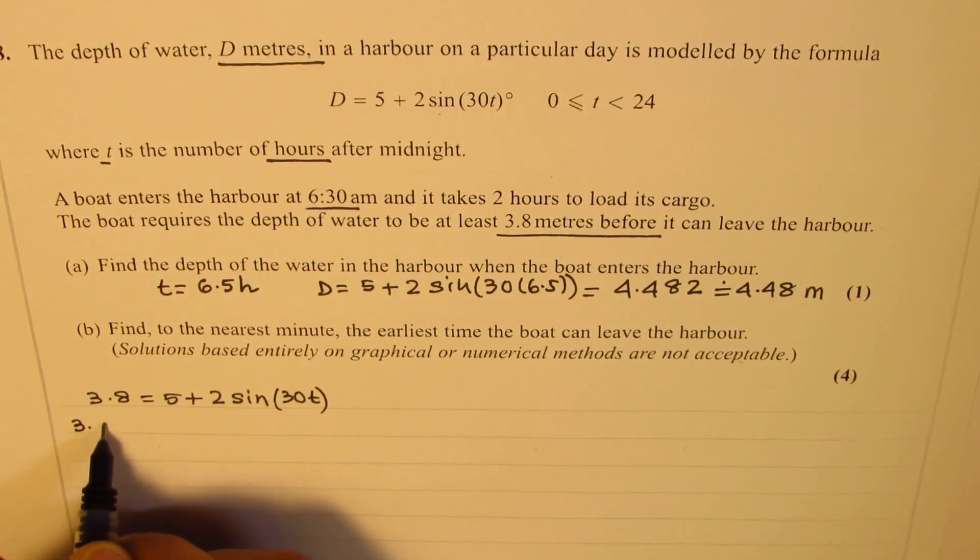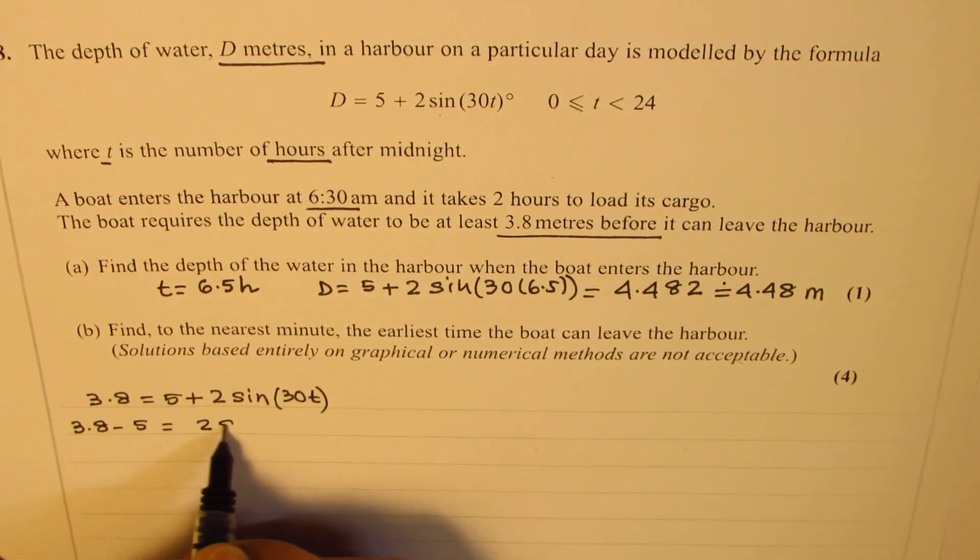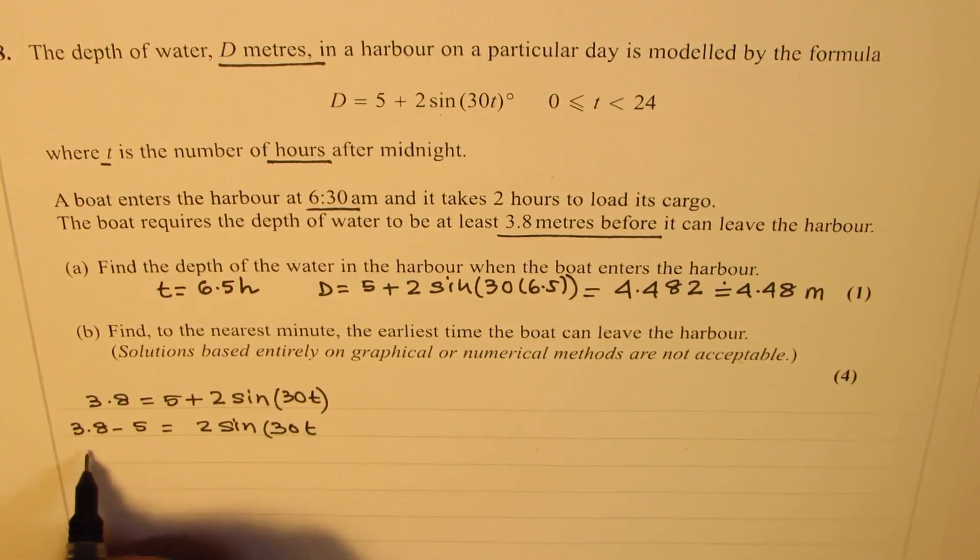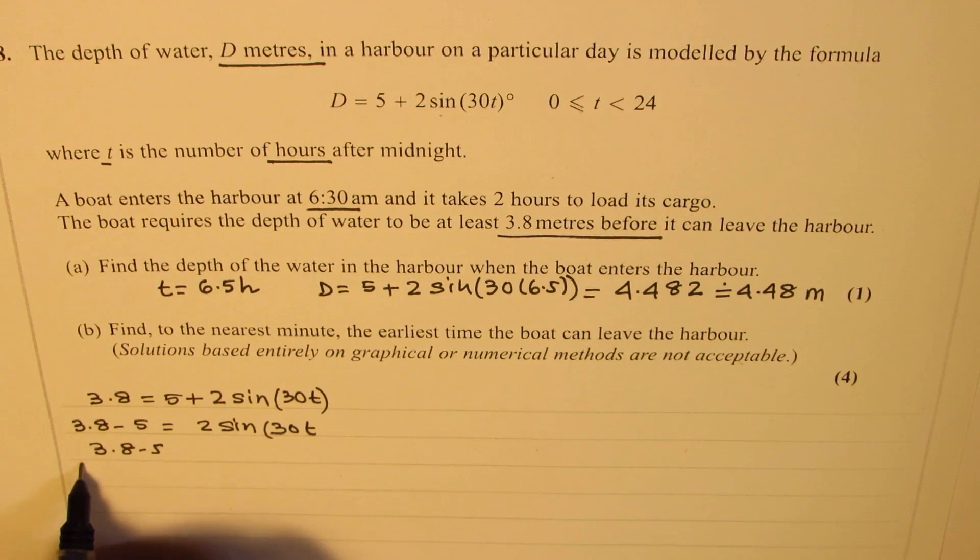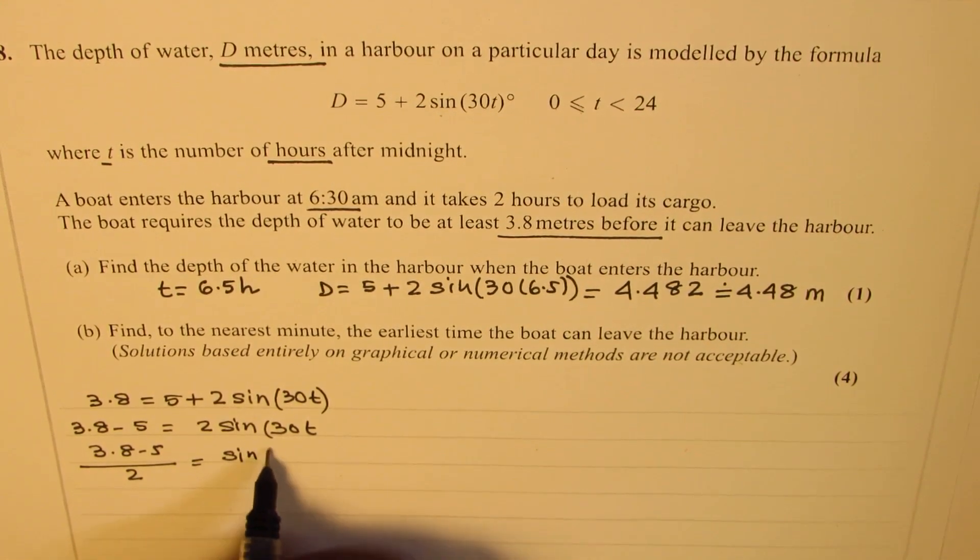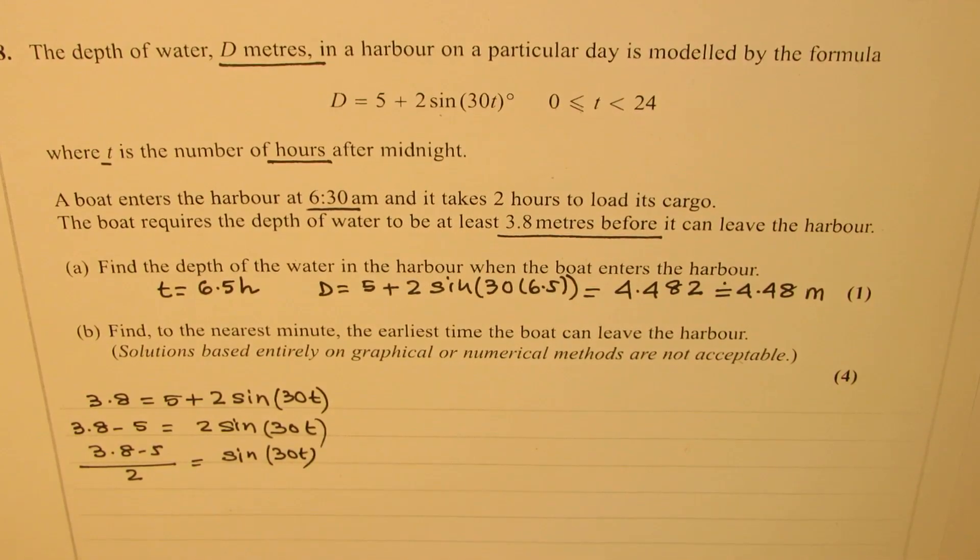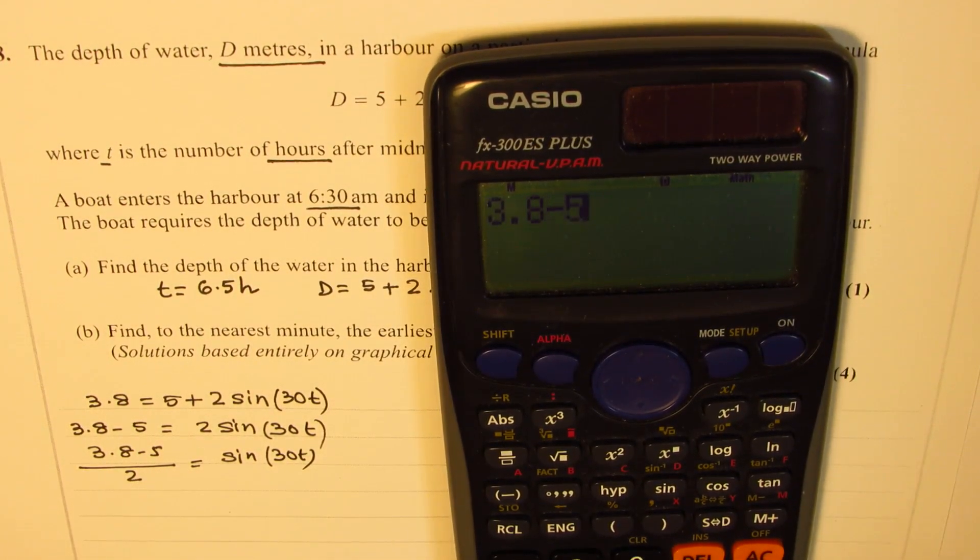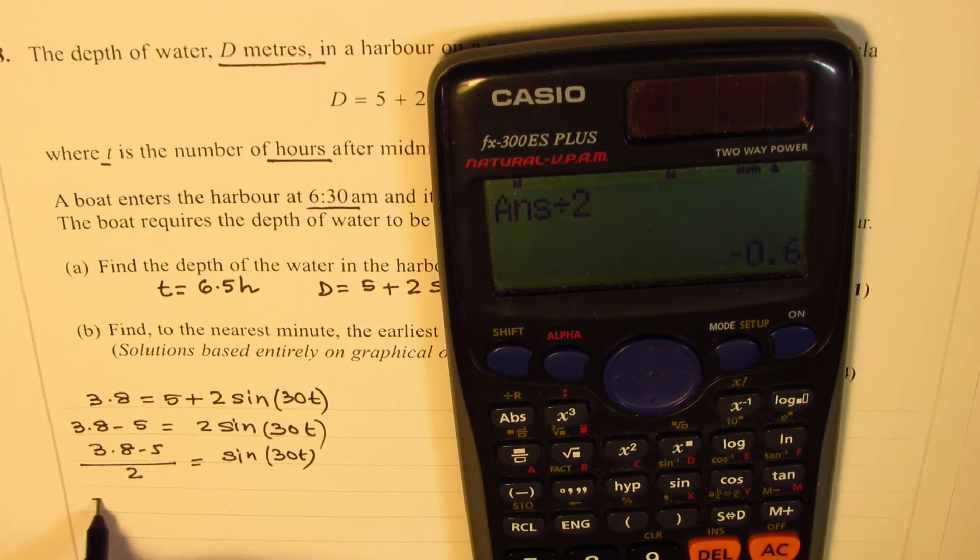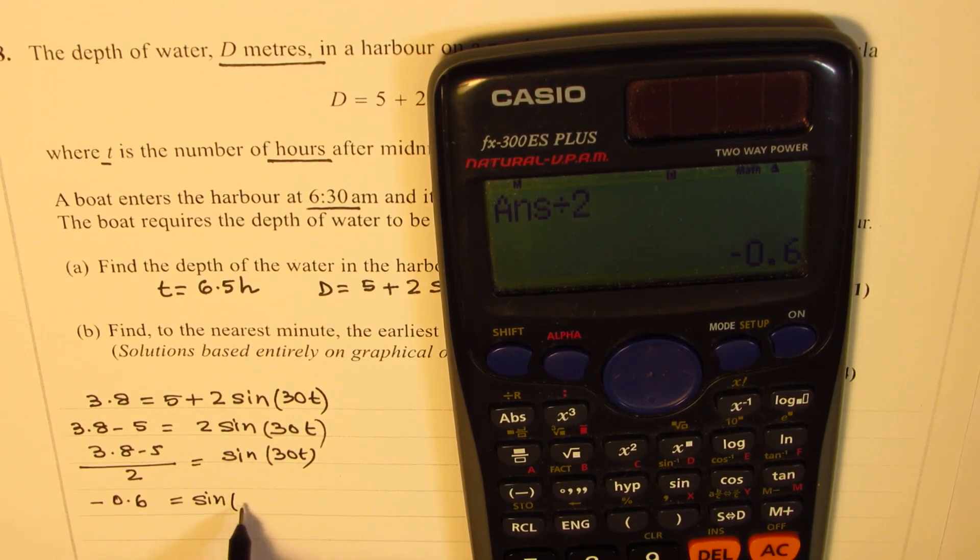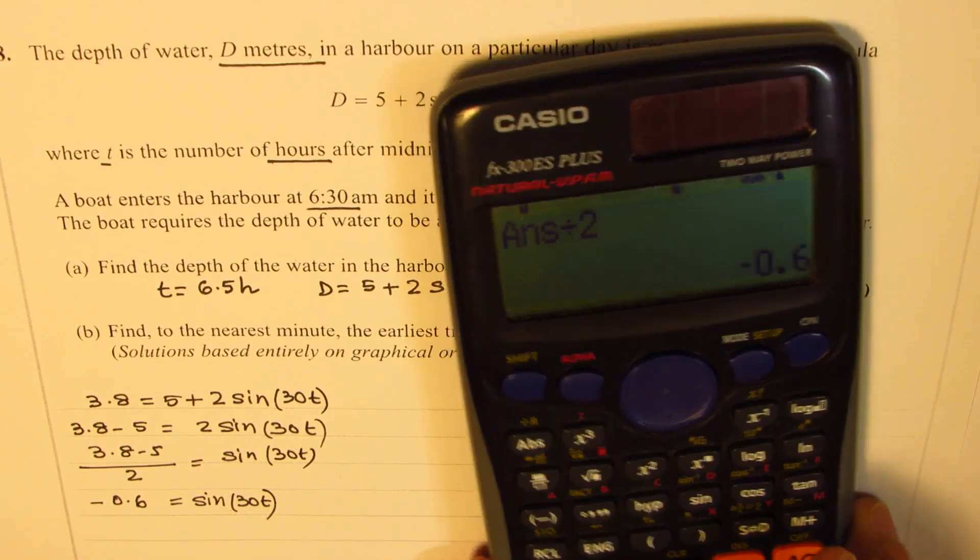So that gives us 3.8 minus 5 equals 2 times sine of 30t. And we can write this as 3.8 minus 5 divided by 2 should be equal to sine of 30t. So 3.8 minus 5 divided by 2 is equal to in decimals minus 0.6. Minus 0.6 is sine of 30t.